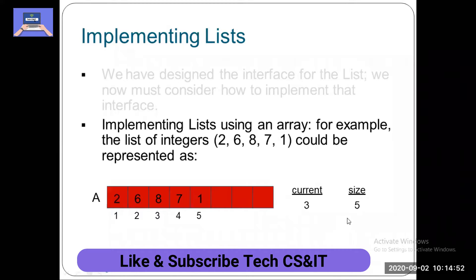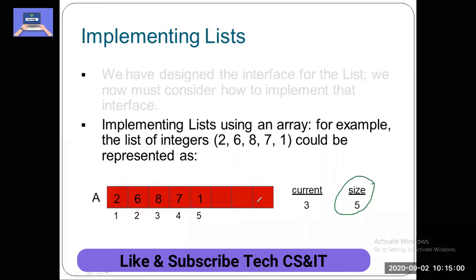So, how much size is it? Size is 5 — 5 elements. Current is 3. Which element is at position 3? It is 8.